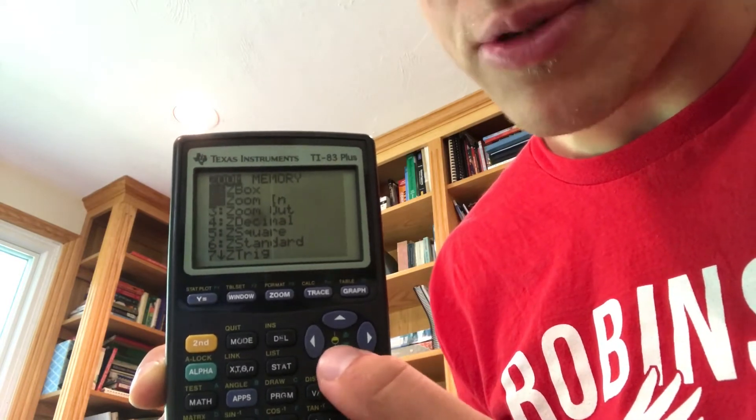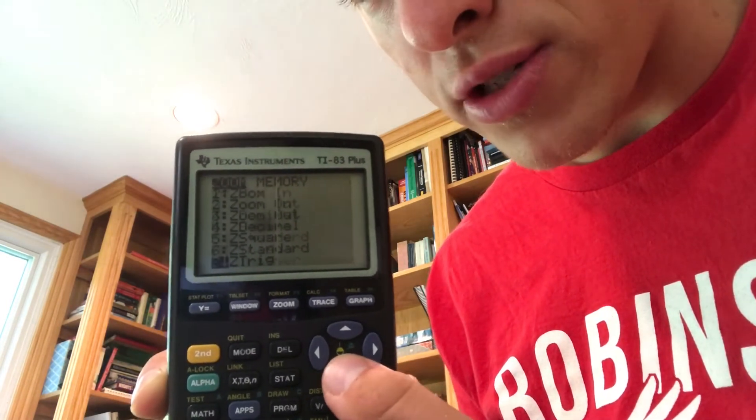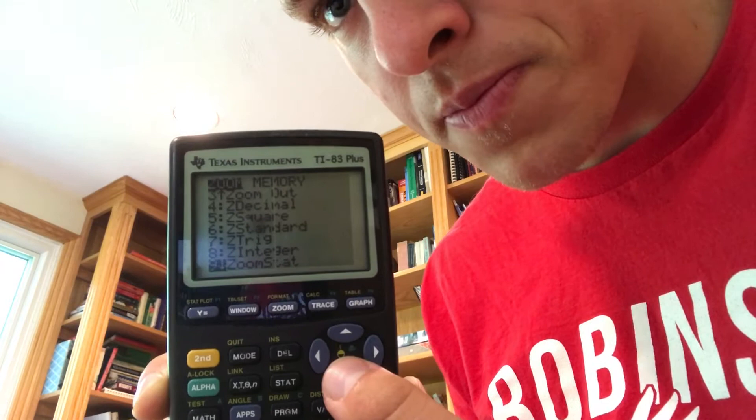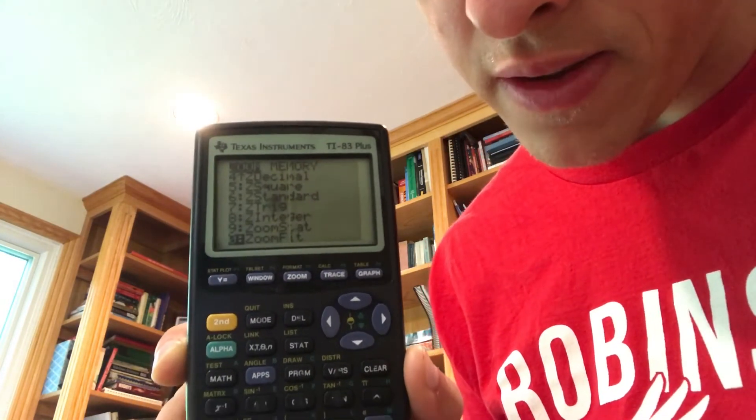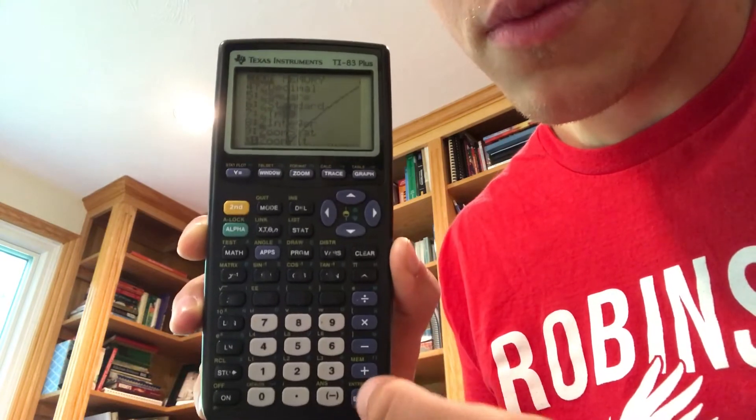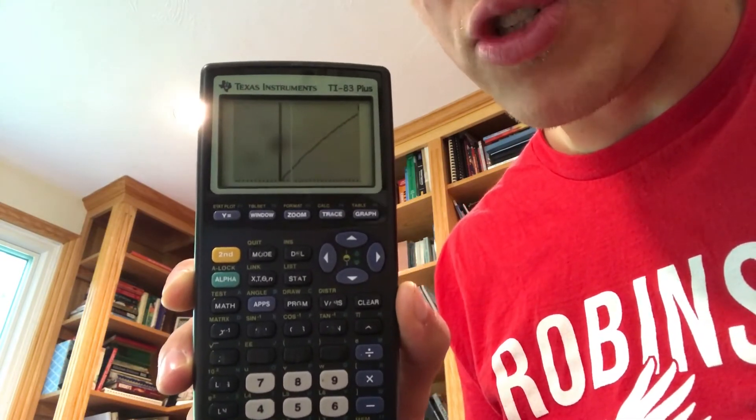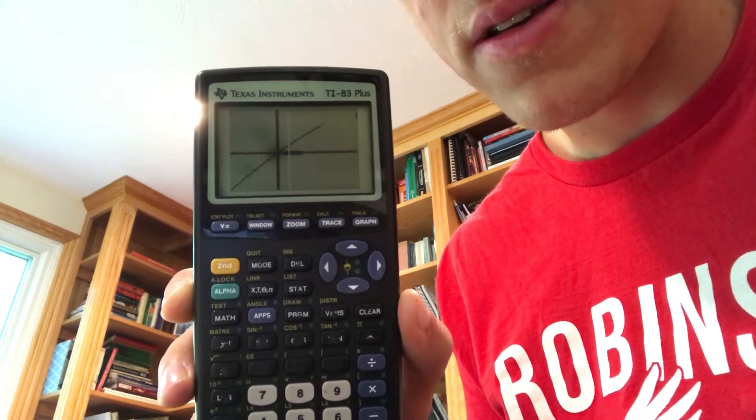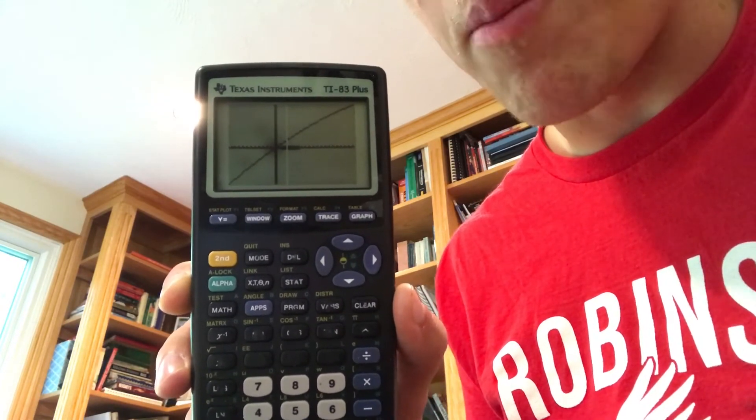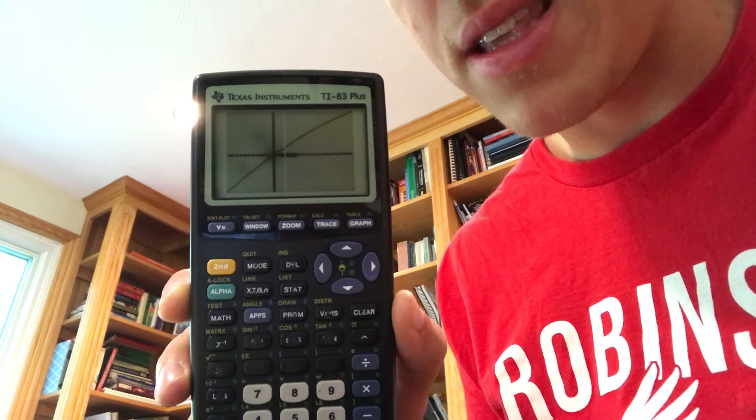So it should be about the 10th option. Go down. You can actually go up to go quicker. Zoom fit right there. Click enter. And what that should do is adjust the window so that we can actually see the function inside of it. All right. So now we can see a lot more of it. We still can't necessarily see the maximum.